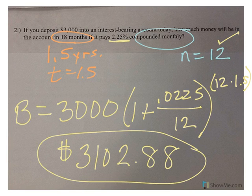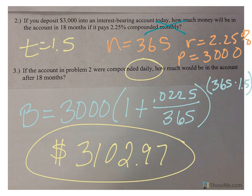So, you can see the difference, $3,102.88 versus $3,102.97. Only a difference of $0.09. Not a huge difference in compounding monthly versus compounding daily, but a little bit of a difference, right? And, if we had started with $10,000 instead of $3,000, we might have had a little bit bigger of a difference, too.